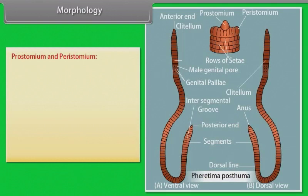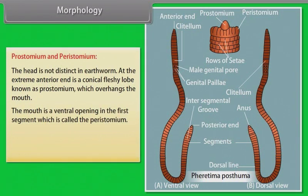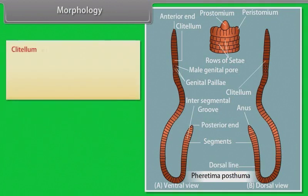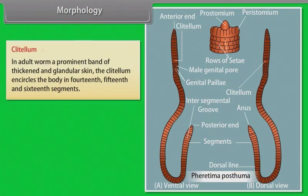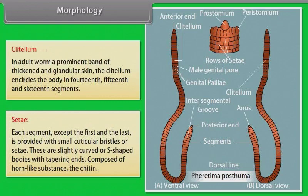The head is not distinct in earthworm. At the extreme anterior end is a conical fleshy lobe known as the prostomium, which overhangs the mouth. The mouth is a ventral opening in the first segment, called the peristomium. The prostomium is sensory in function and helps the earthworm discriminate between light and dark. The clitellum encircles the body in the 14th, 15th, and 16th segments. Each segment except the first and last is provided with small cuticular bristles called setae, which are slightly curved or S-shaped, composed of chitin.